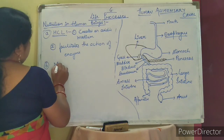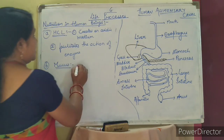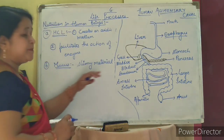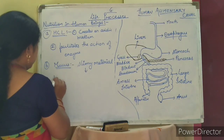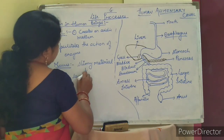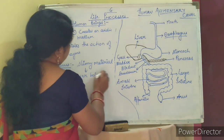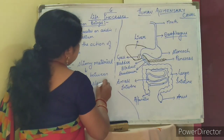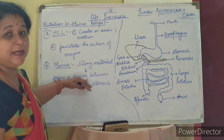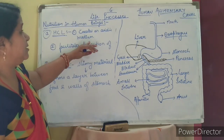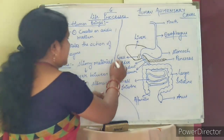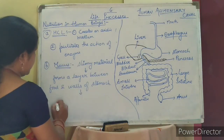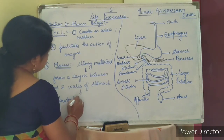The second component is mucus. Mucus is a slimy material. It forms a protective layer between the food and the walls of the stomach. This prevents the acid from coming into contact with the stomach walls, protecting them. Its main function is a protective function.